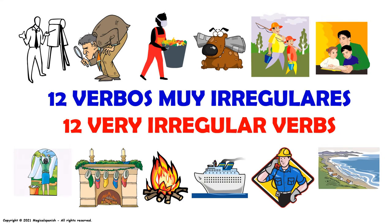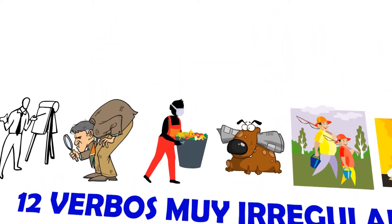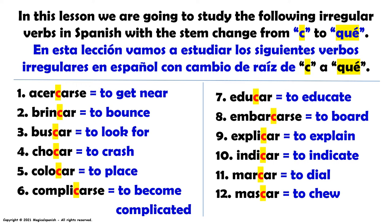Doce verbos muy irregulares. In this lesson, we are going to study the following irregular verbs in Spanish with the same change from C to QUE. En esta lección, vamos a estudiar los siguientes verbos irregulares en español con cambio de raíz de C a QUE: 1. Acercarse, 2. Brincar, 3. Buscar, 4. Chocar, 5. Colocar, 6. Complicarse, 7. Educar, 8. Embarcarse, 9. Explicar, 10. Indicar, 11. Marcar, 12. Mascar.